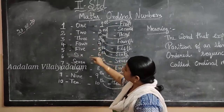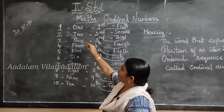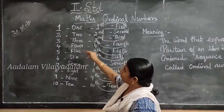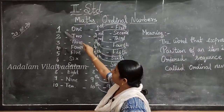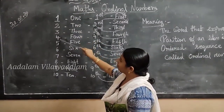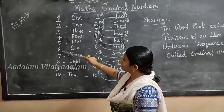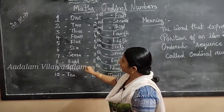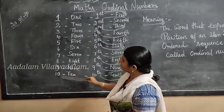These are the cardinal numbers. From 1 to 10 are called cardinal numbers: 1, 2, 3, 4, 5, 6, 7, 8, 9, 10.